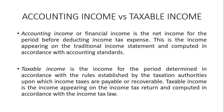The main difference between accounting income and taxable income is the basis of reporting. Accounting income is based on accounting standards — the revenue and expense recognition principles — and is shown on the financial statements, particularly the income statement. Taxable income is in accordance with the income tax law. Normally, accounting standards and income tax law are different, which is why the taxable income and accounting income differ.